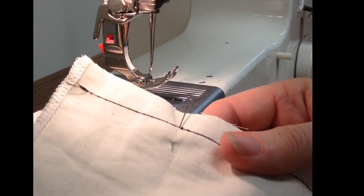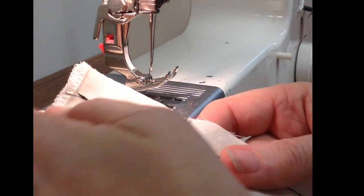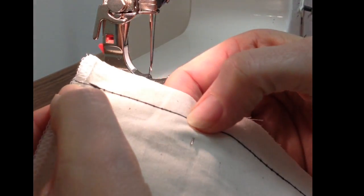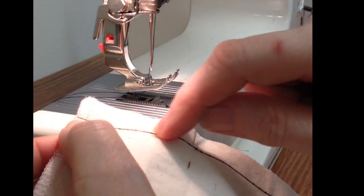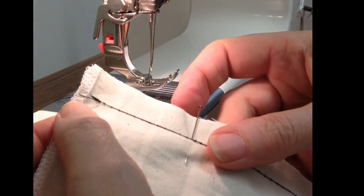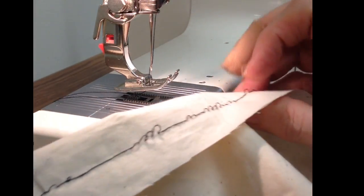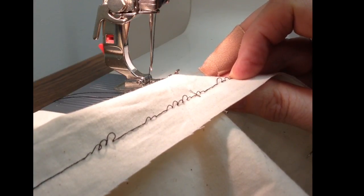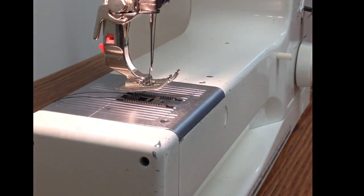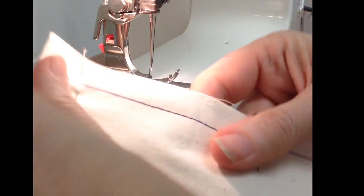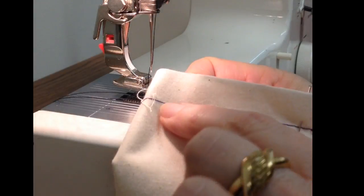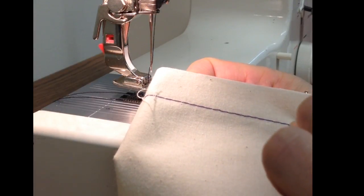Sometimes when you're stitching you'll notice the tension is off and what that means is that the actual thread that is making the stitches is bumpy, looks bumpy here. And on the back it looks loopy. What that means is that your tension is off. What a good tension looks like is smooth and even on the top and also smooth and even on the bottom.